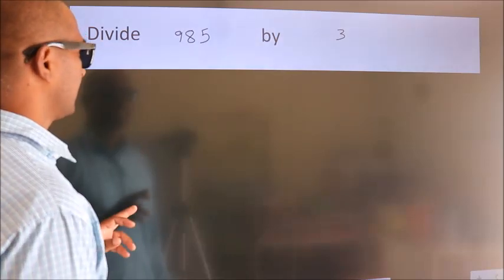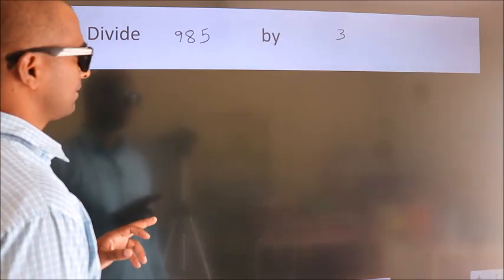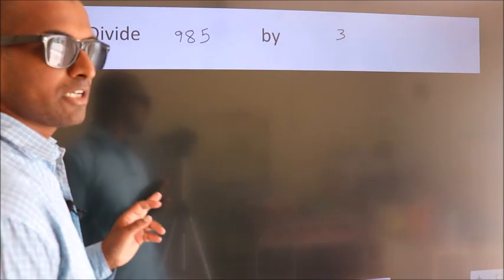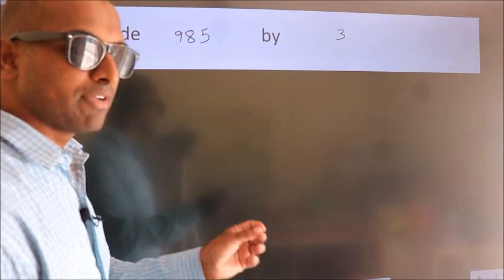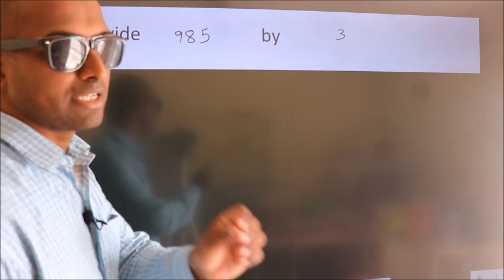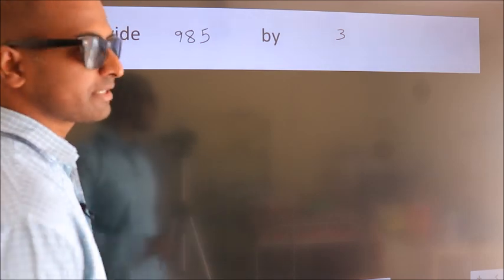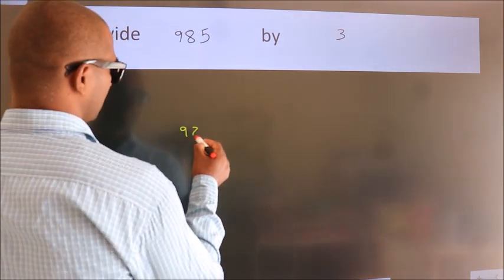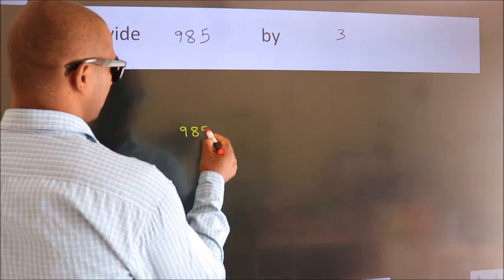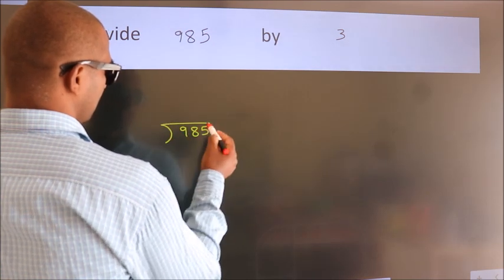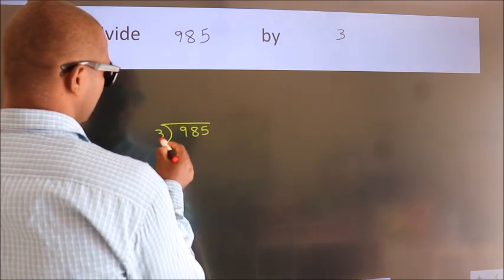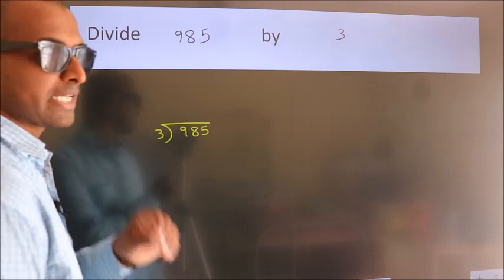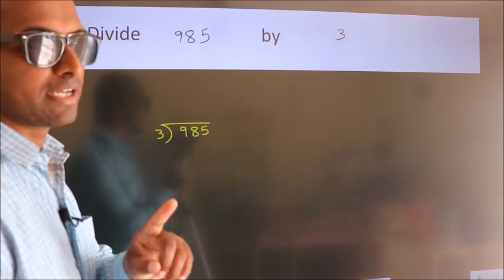Divide 9.85 by 3. To do this division, we should frame it in this way: 9.85 here, 3 here. This is your step 1.